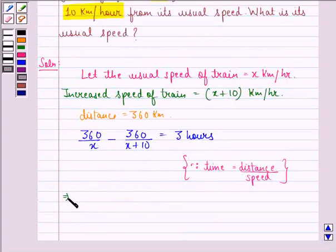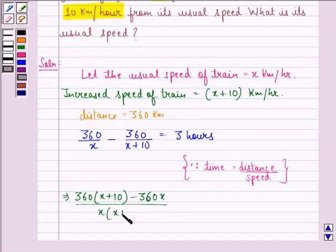This implies 360 into x plus 10 minus 360x divided by x into x plus 10 is equal to 3 upon 1.